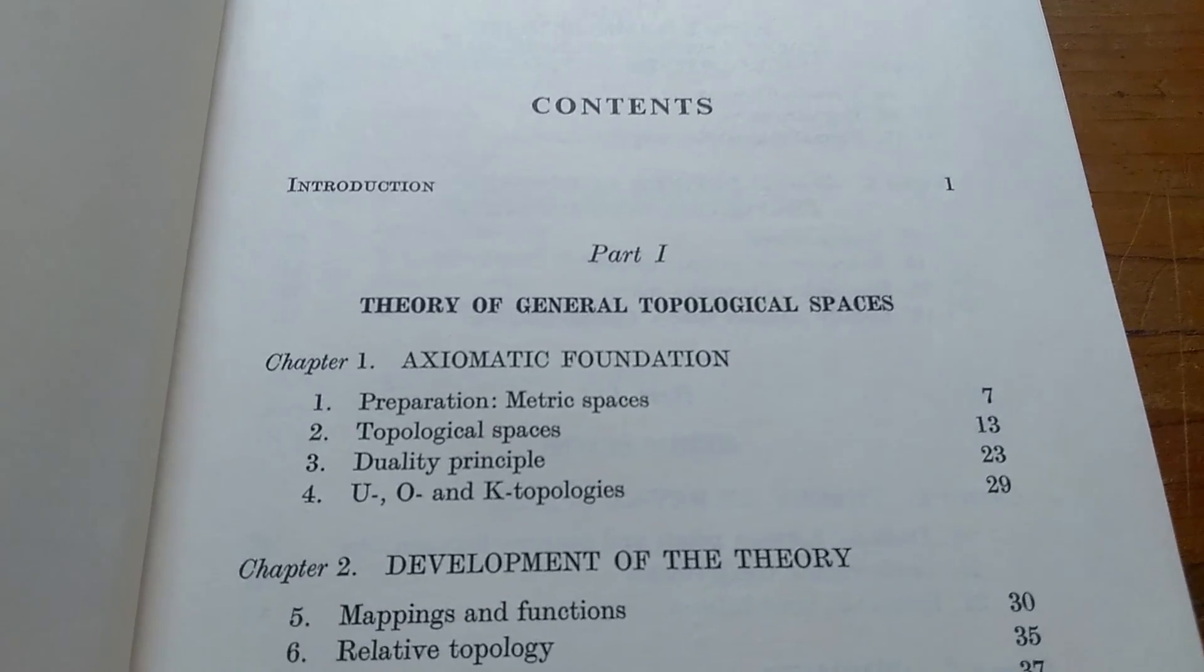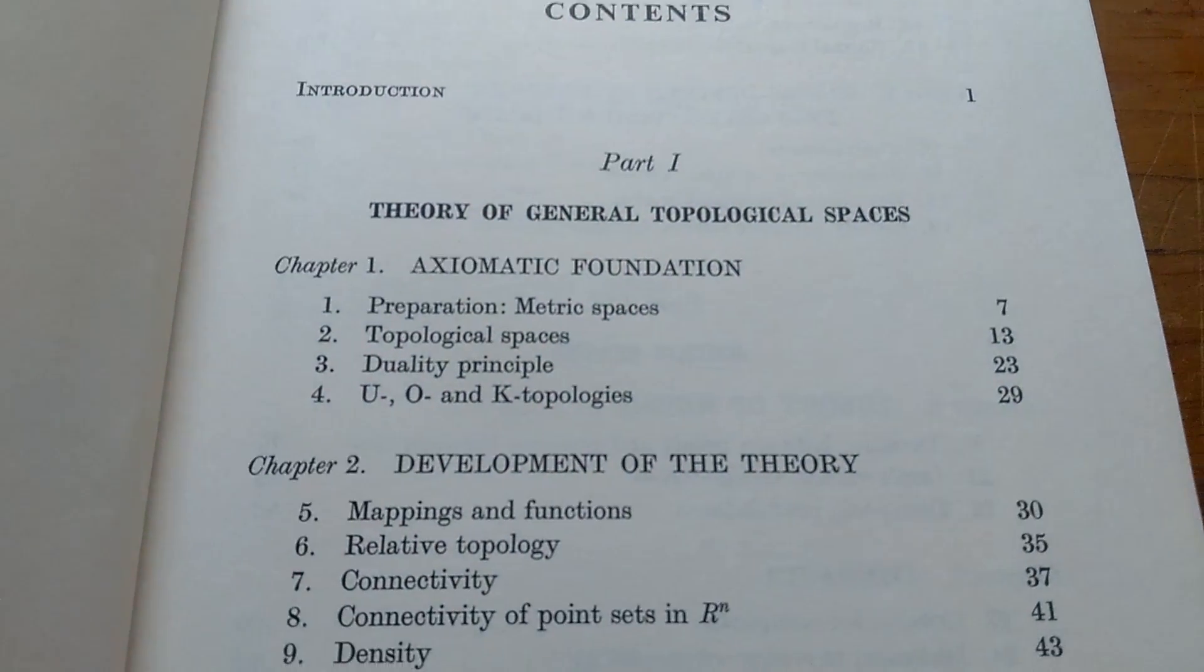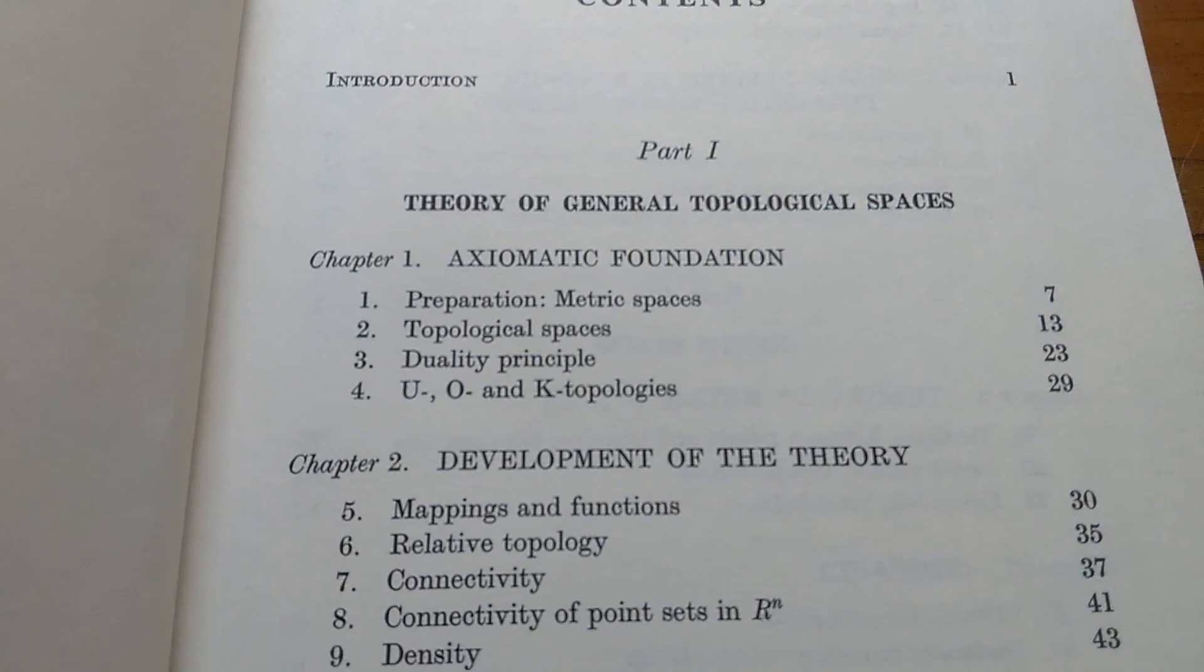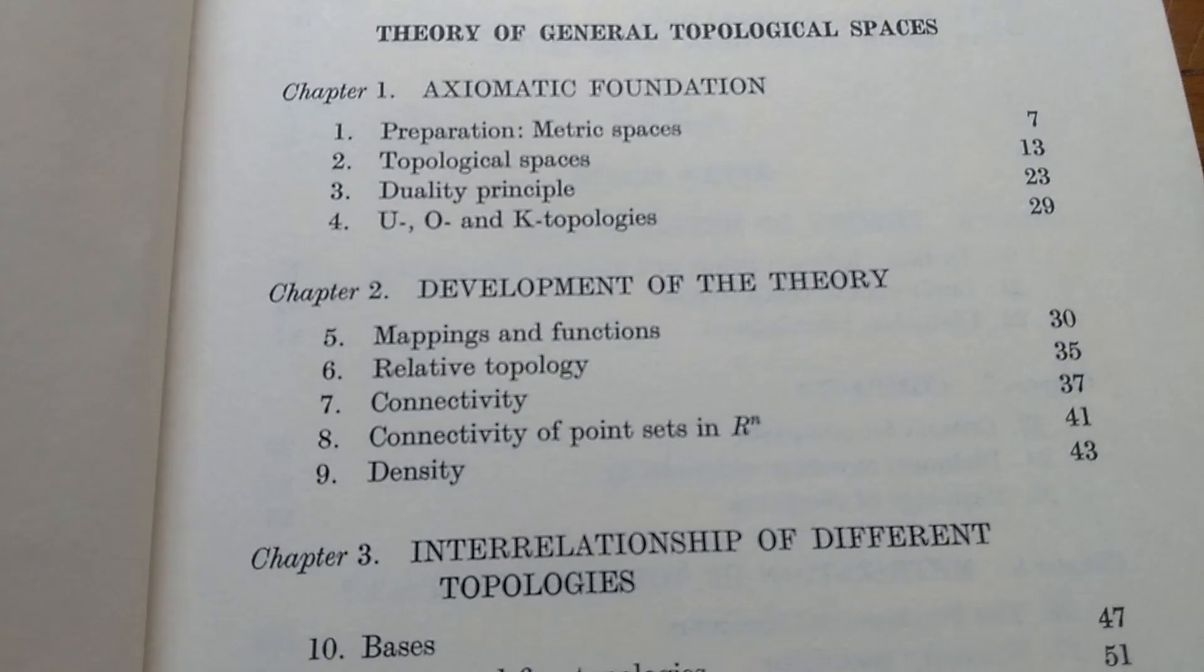So this is the table of contents. It says Theory of General Topological Spaces. So I have read various sections of this book. So it starts off with metric spaces, topological spaces. Then it goes on to some more stuff. It talks about the relative topology.